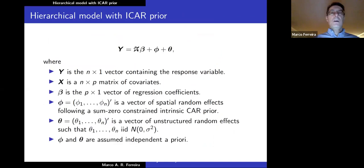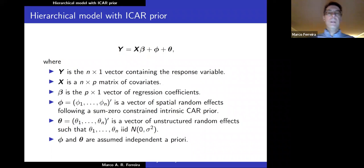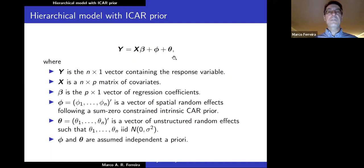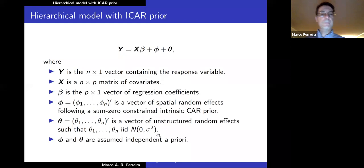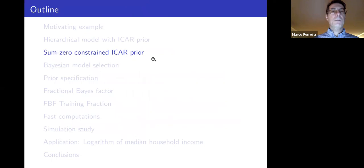We use the following hierarchical model. y is a vector of the response variable, X is a matrix of covariates, beta is a vector of regression coefficients, phi is a vector of spatial random effects following a sum-zero constrained intrinsic CAR prior, and theta is a vector of unstructured random effects — essentially the error term in the linear mixed model. theta_1 through theta_n are iid Normal with mean zero and variance sigma-squared, and phi and theta are assumed to be independent a priori.